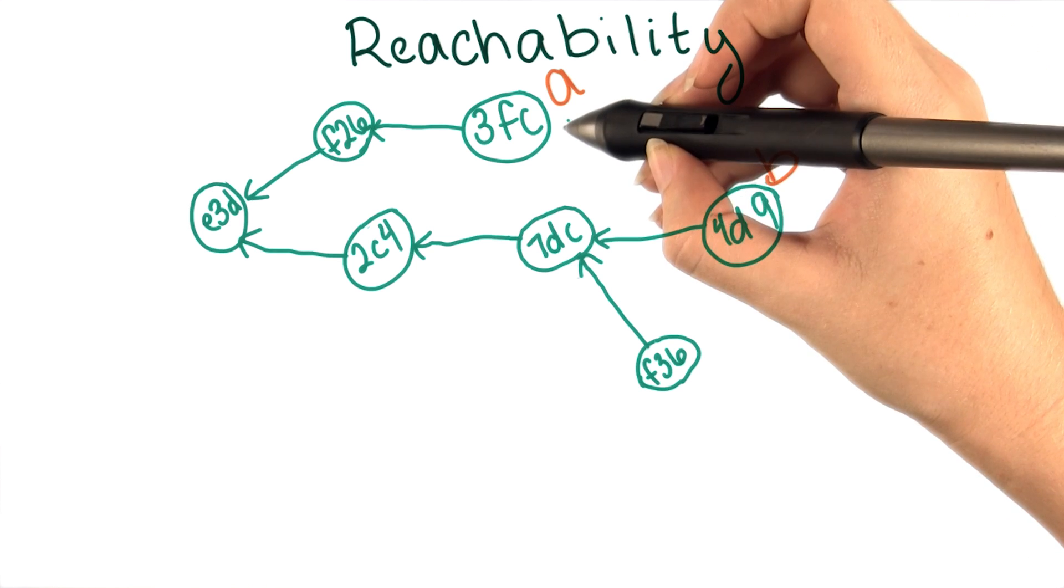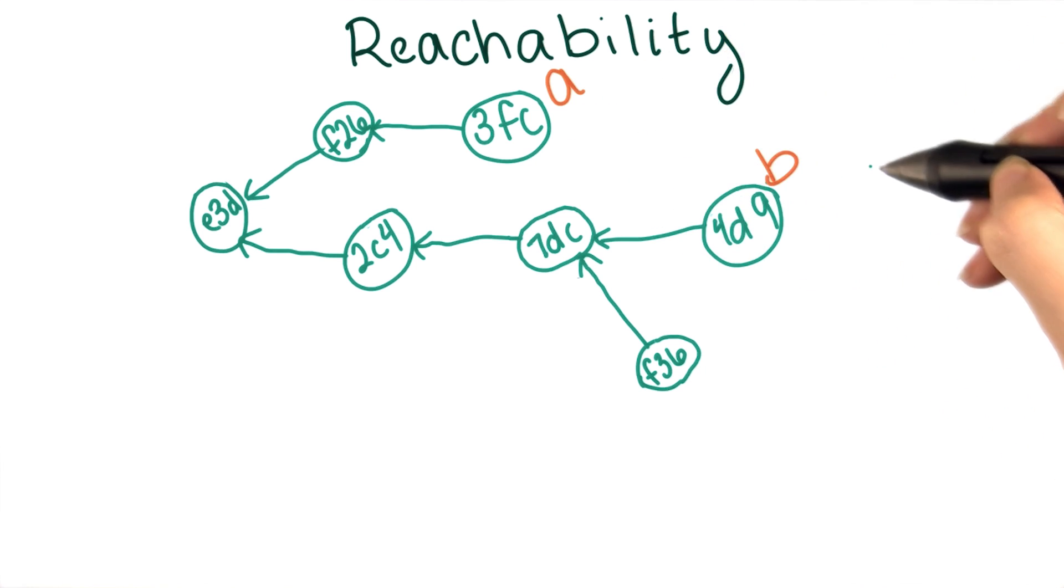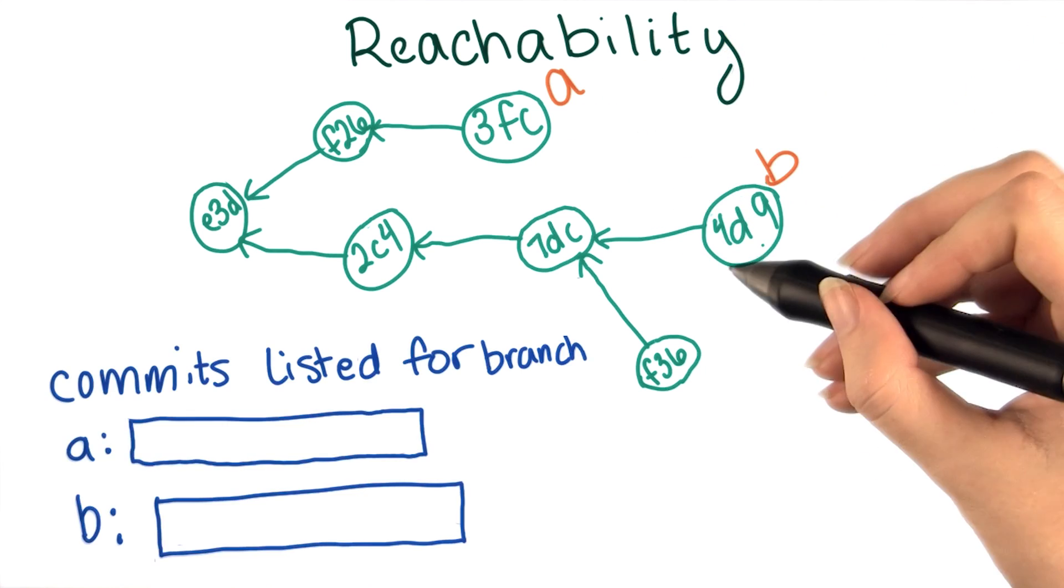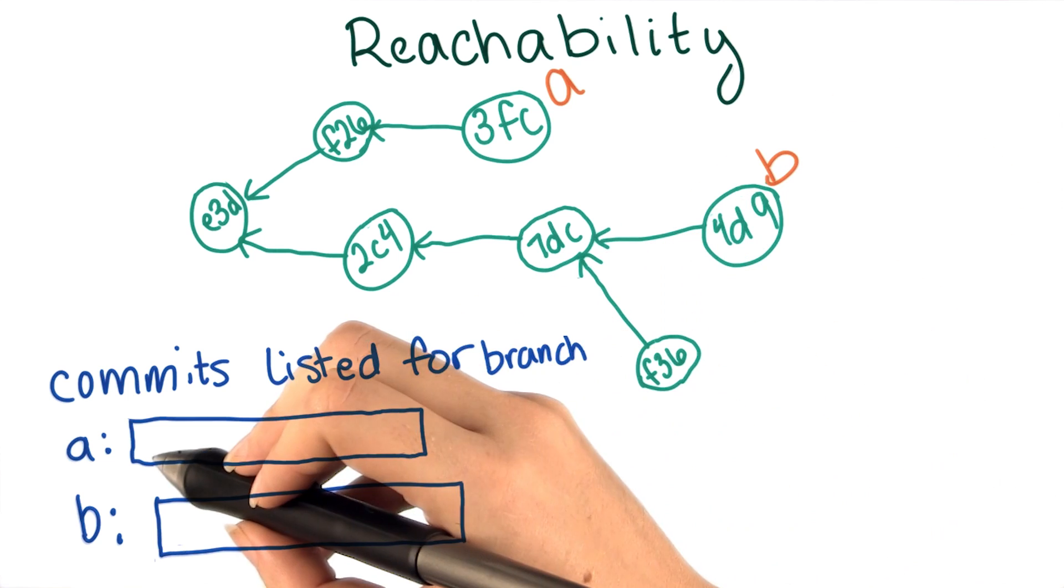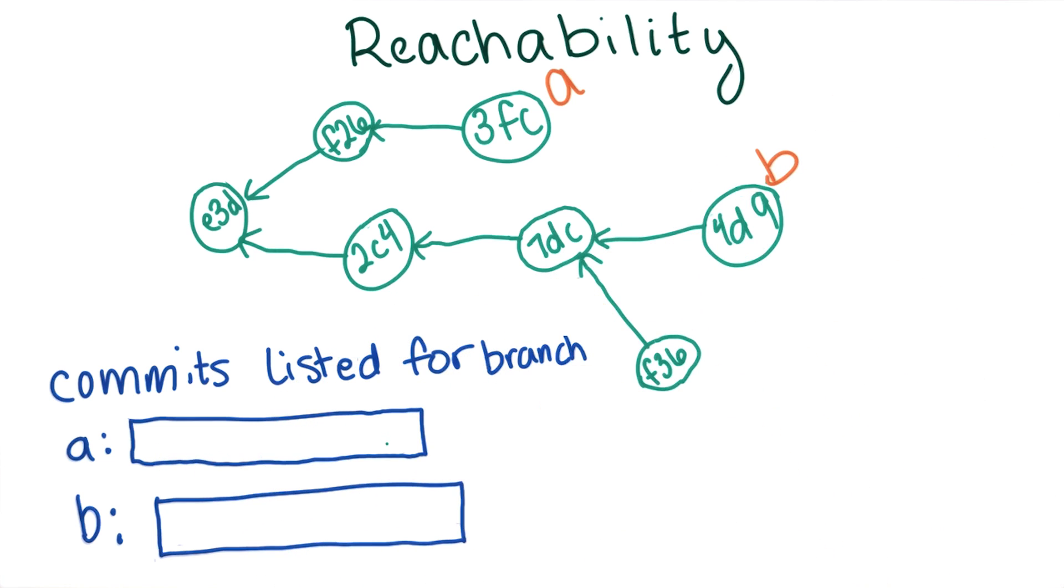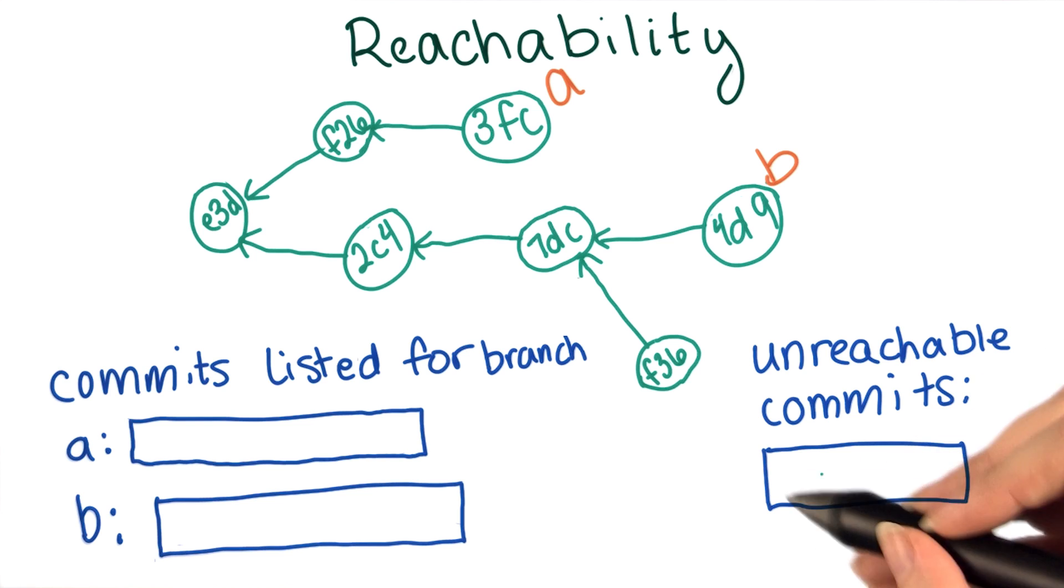Given this diagram, if I ran git log for each of the branch A and B, which commits would be listed? List the commits by their shortened IDs from most to least recent and separate them with commas. Also, are there any unreachable commits in this diagram? If so, list them here.